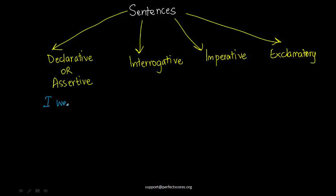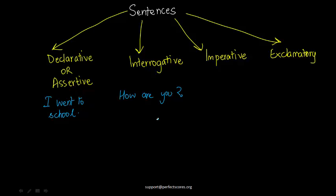For example, 'I went to school.' This is stating something — asserting or declaring something — so these kinds of sentences are known as declarative or assertive. The next kind is interrogative. As the name suggests, interrogation refers to questioning, so all sentences that ask a question are known as interrogative sentences. For example, 'How are you?' Any sentence with a question mark at the end is an interrogative sentence. Declarative or assertive sentences are simple statements; interrogative ones are questions.